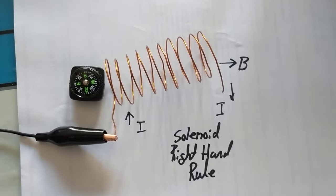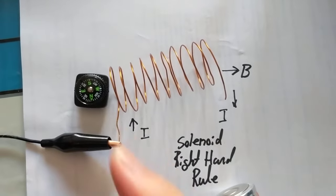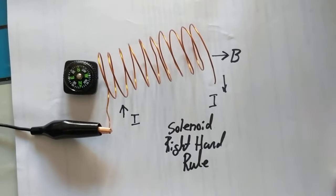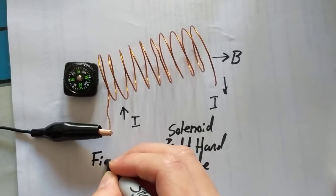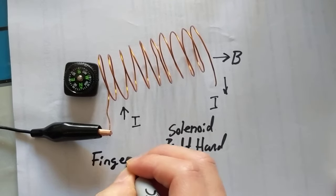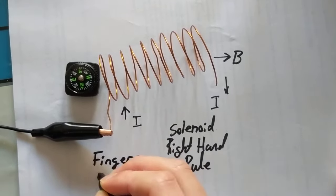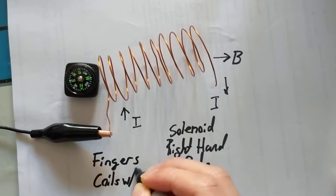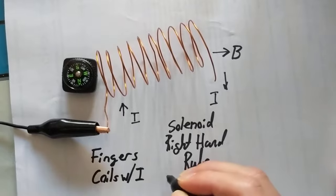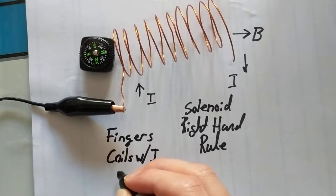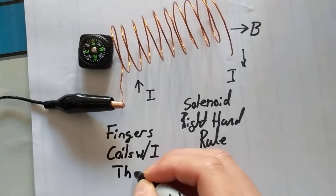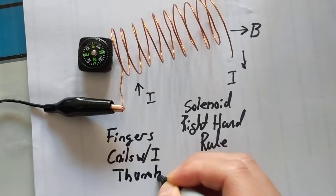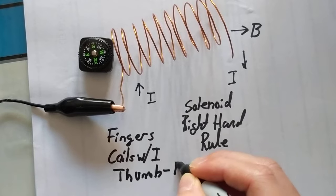Basically, what's going to happen is that instead of doing this for every part of the loop, we're going to flip things. So in this one, your fingers are going to be the coils with the current, and then your thumb is going to be the magnetic field.